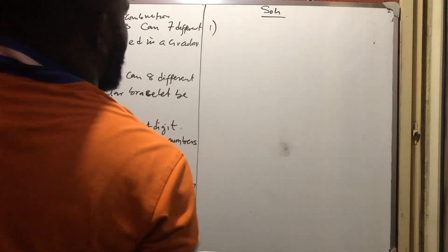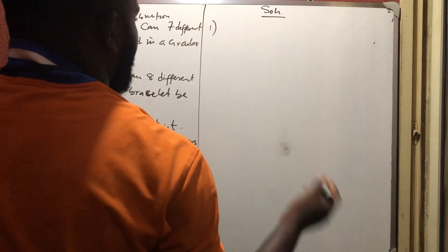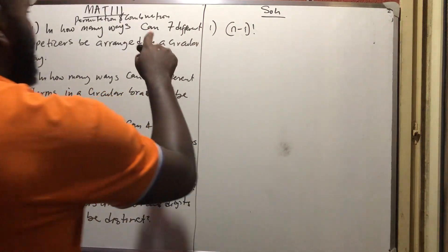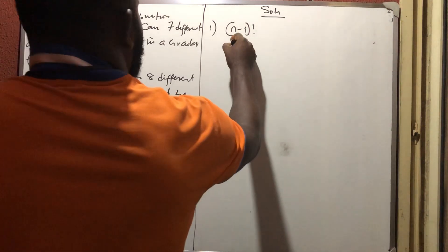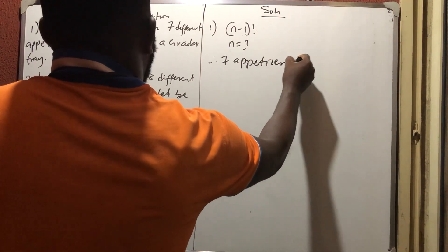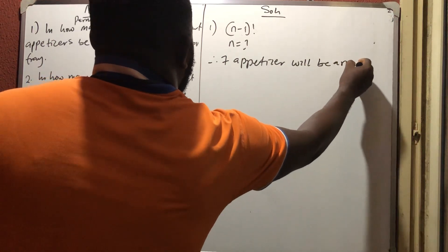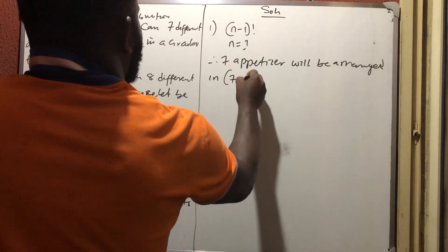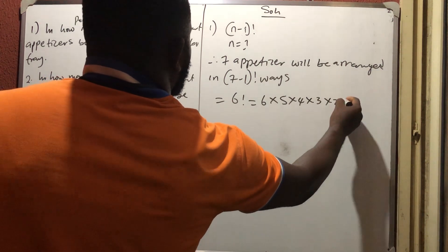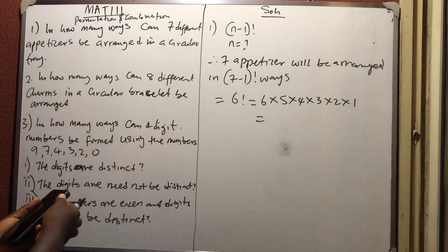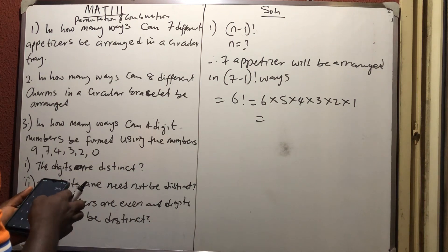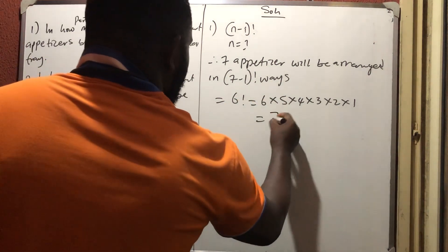Whenever you want to arrange anything in a circular tray, round table, or circular form, the formula is simply (N-1) factorial. We are arranging seven appetizers, so N=7. Therefore, seven appetizers will be arranged in (7-1)! = 6! ways. Six factorial is 6×5×4×3×2×1 = 720 ways.